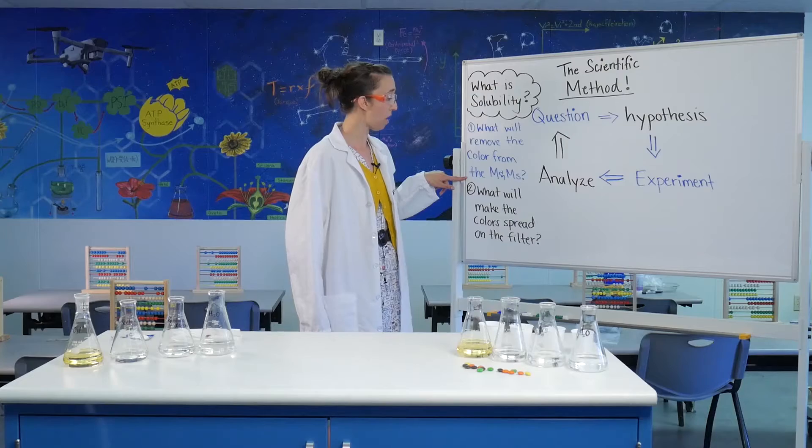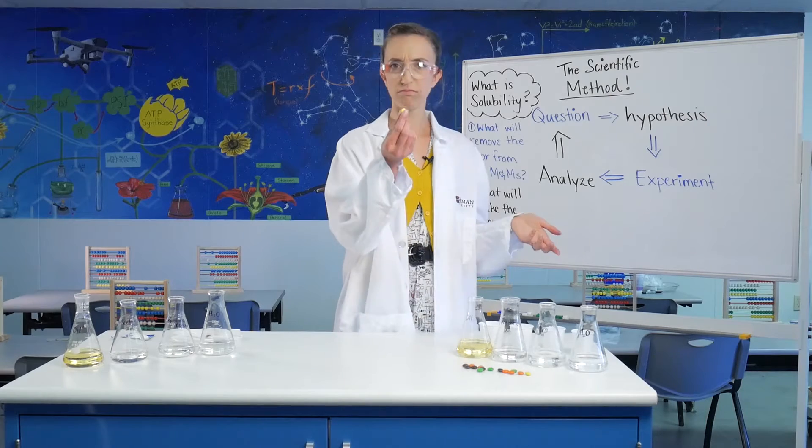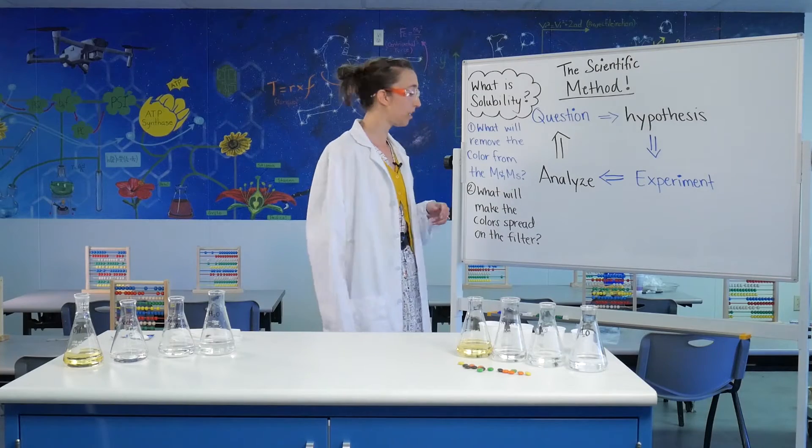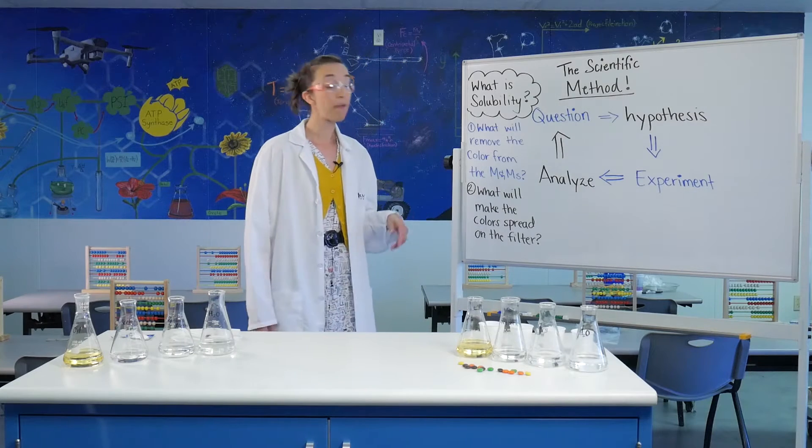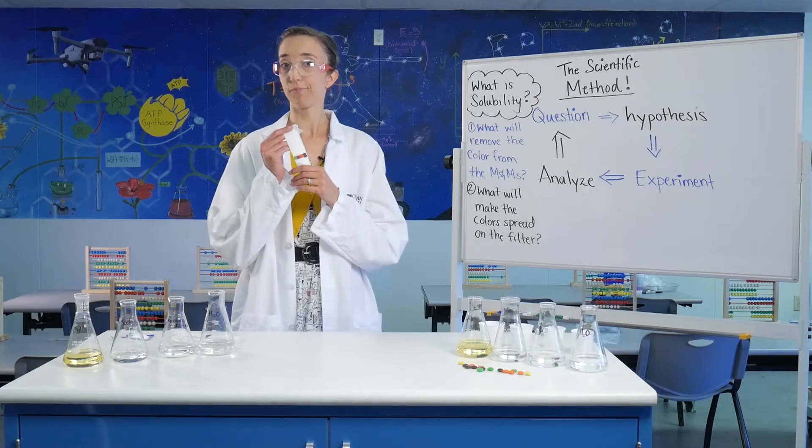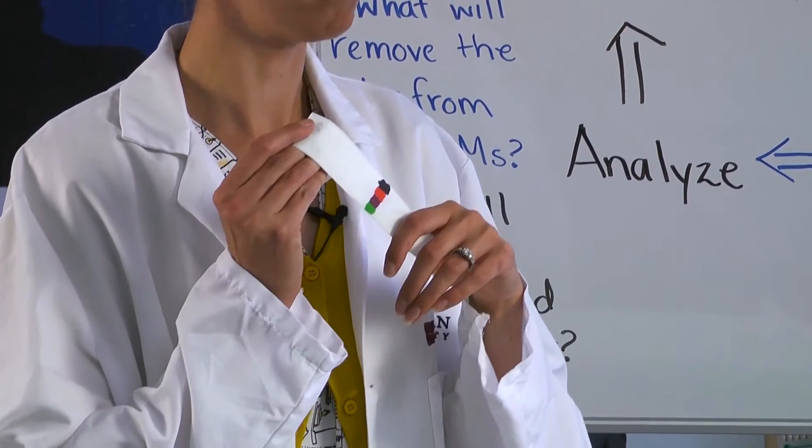We're going to do an experiment with M&Ms. I want to know where does this color come from and does it come off? The second question we're going to do today is we're going to talk about what makes the color spread on a piece of filter paper. This is permanent marker, but will I get it to actually be removed?